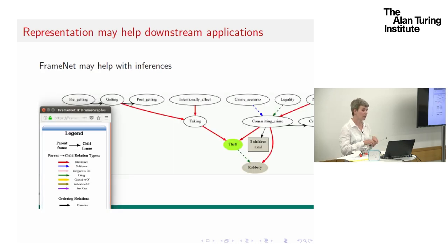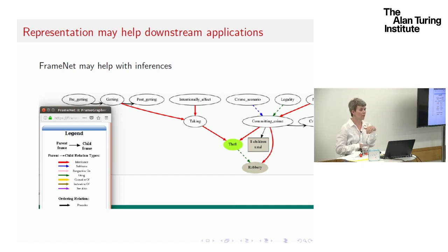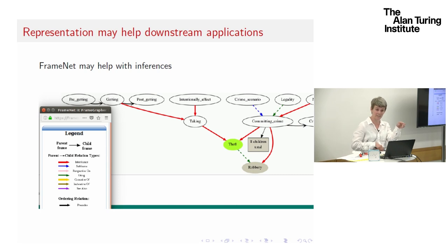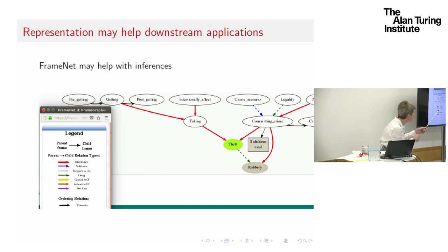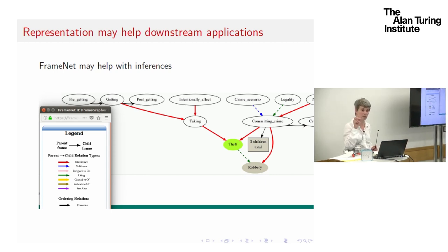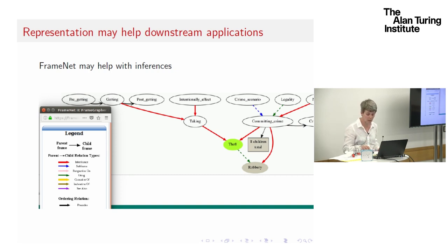FrameNet, for example, allows lots of inferences. If we take the frame 'theft,' there's a participant who did the stealing, and we can learn they also participated in the 'getting.' They'll probably have participated in a crime scenario too, there'll be a suspect and a victim. So these resources can be very useful. It would be great if the machines could just do this all bottom-up, but they're not there yet.